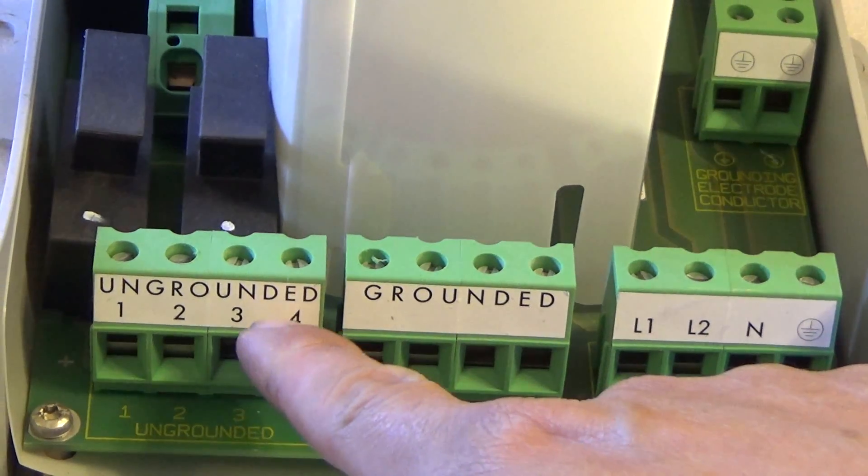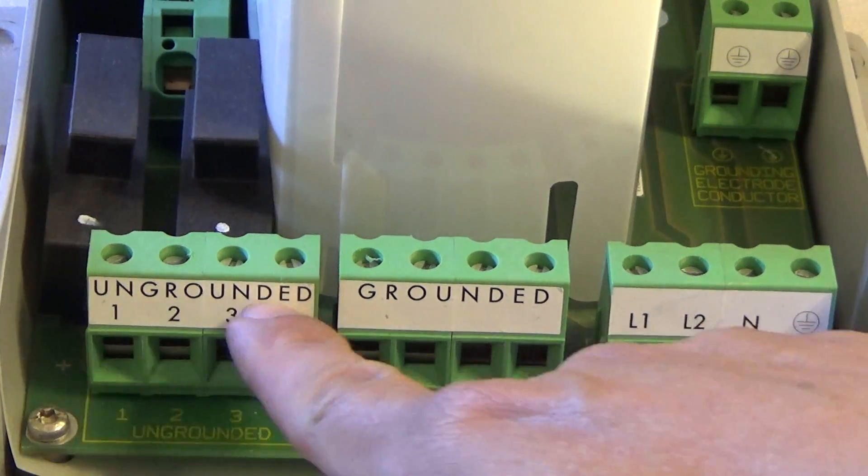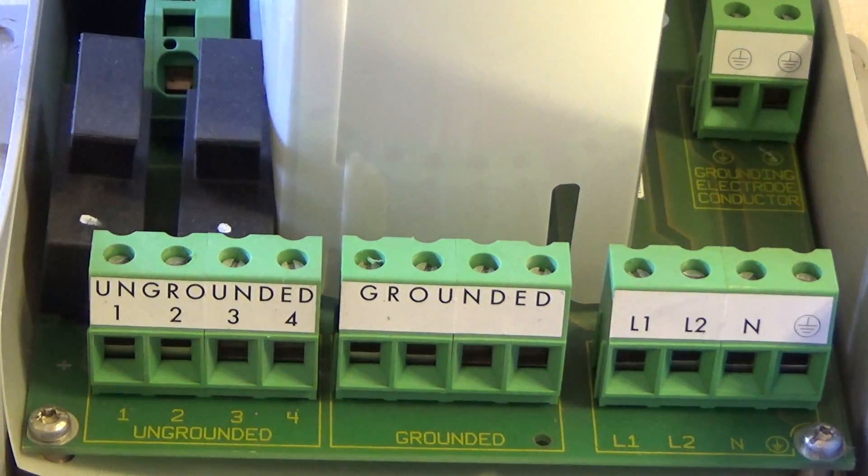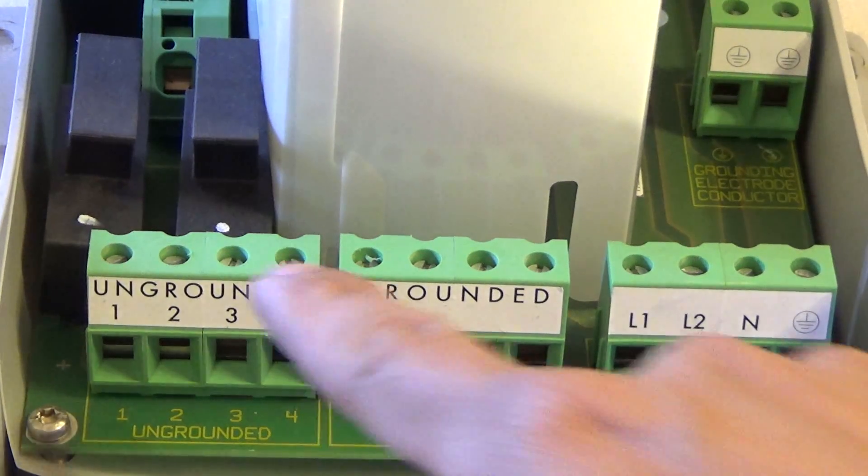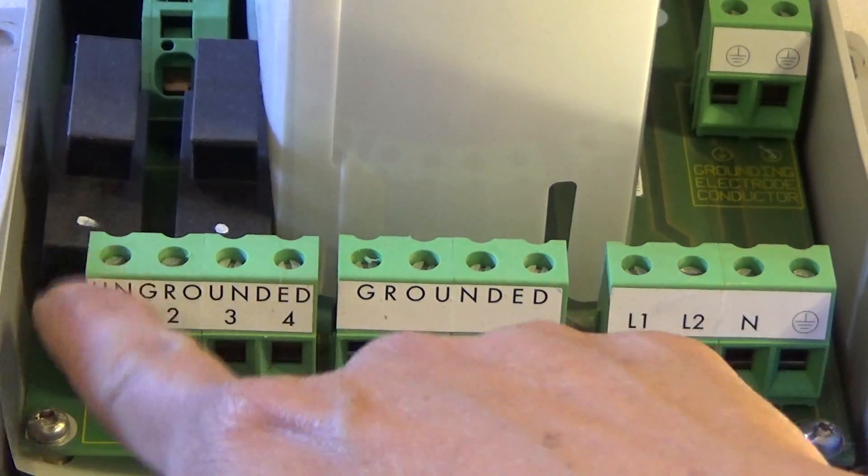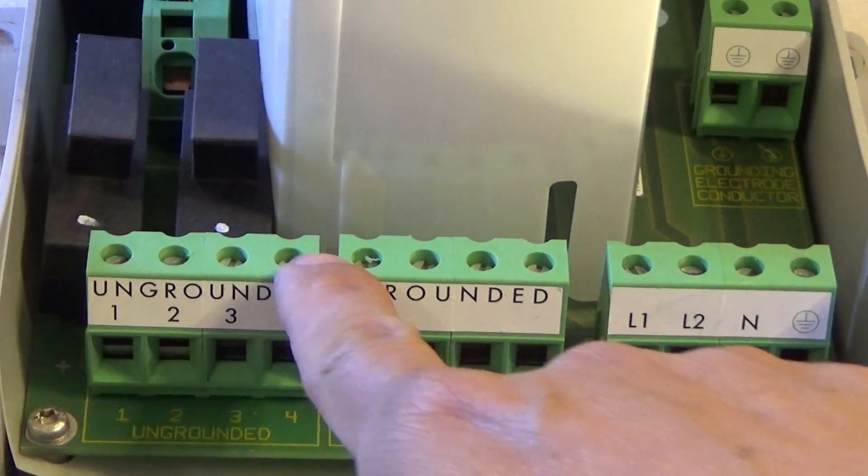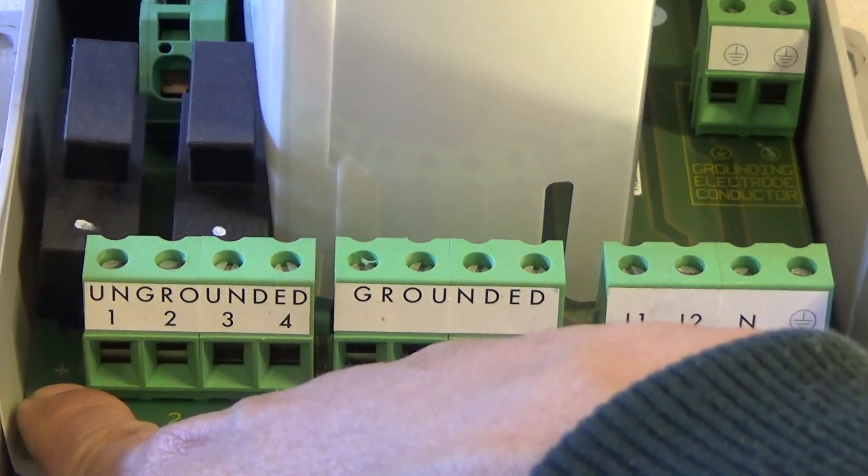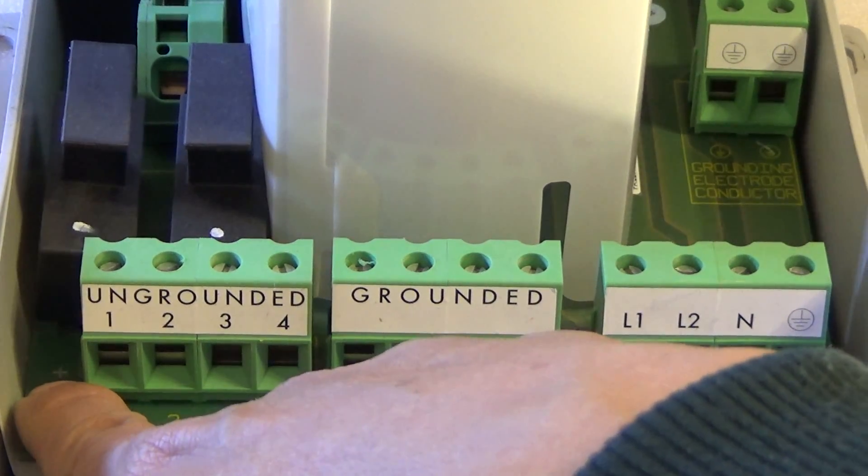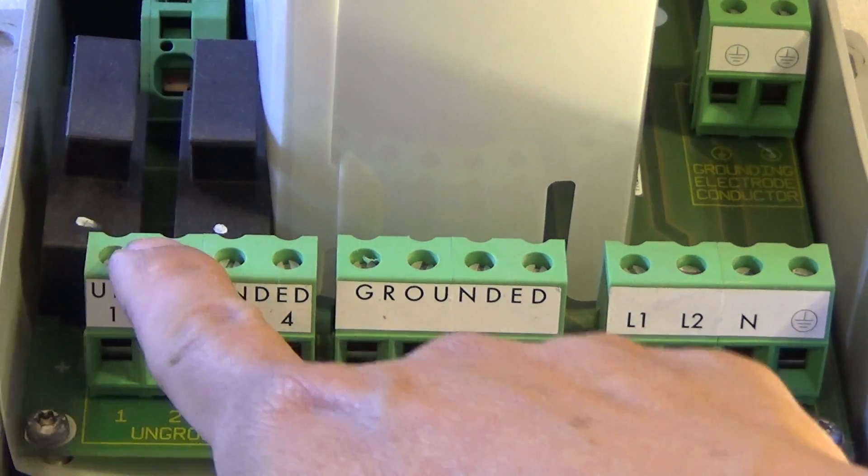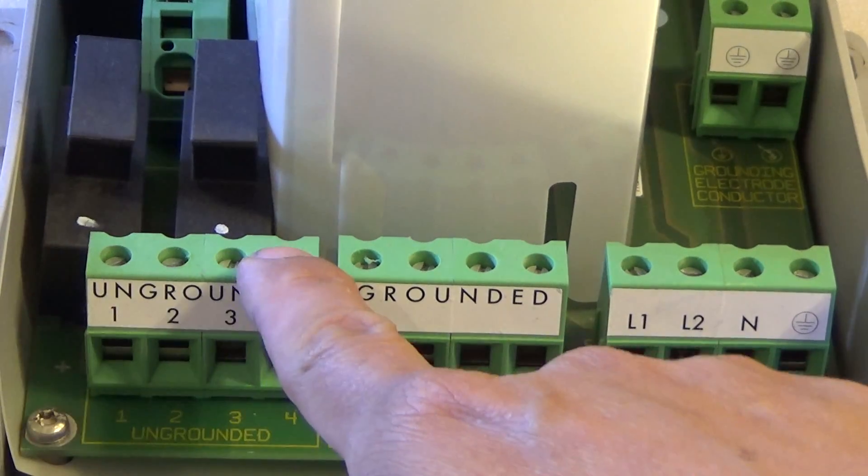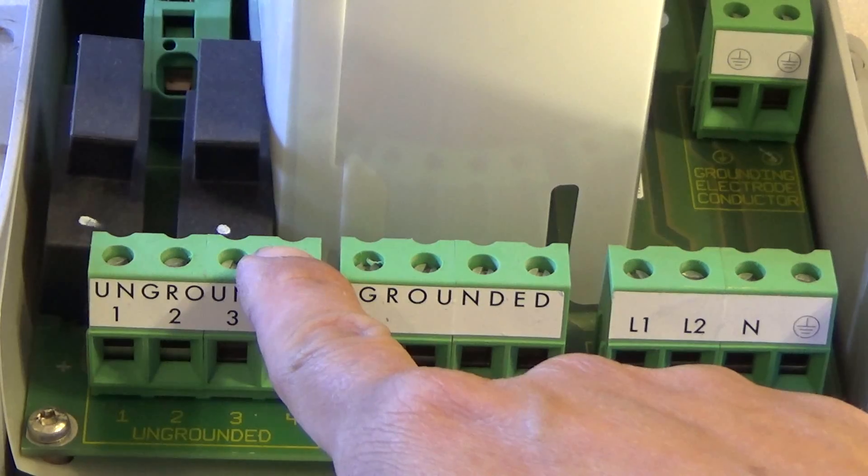So ungrounded means positive. I don't know why they have to word it like this, which is a bit weird. But this is the positive. So all four connections here are positive. You can see the positive sign all the way at the corner over there. So this is the positive coming from the solar array.